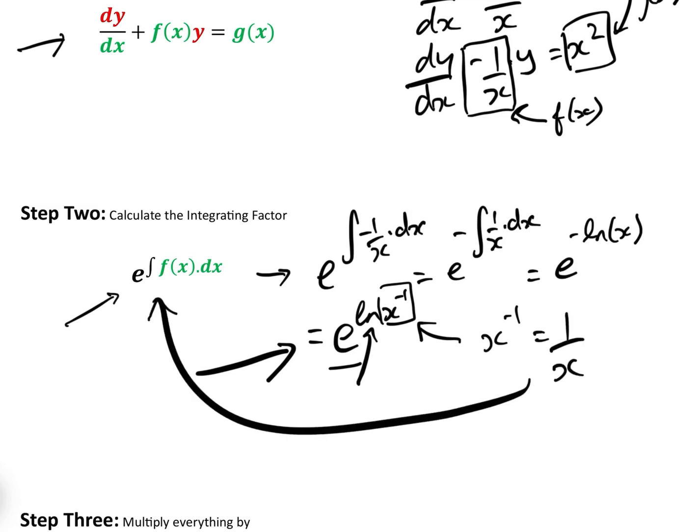x to the minus 1, which is 1 over x. So, our integrating factor, e to the integral of f of x dx is 1 over x.